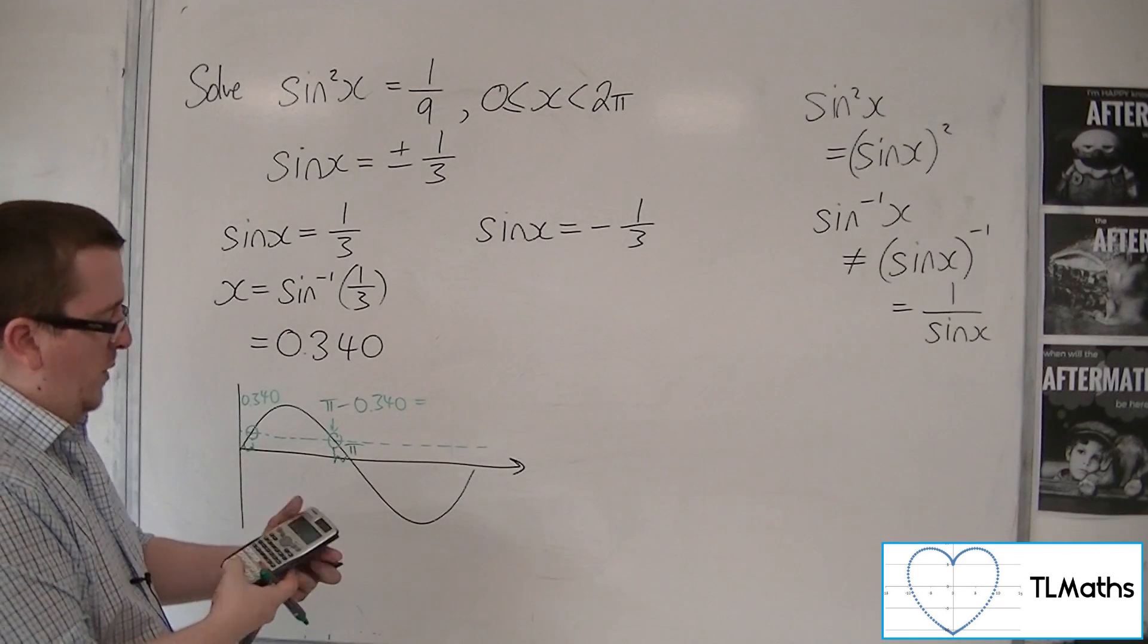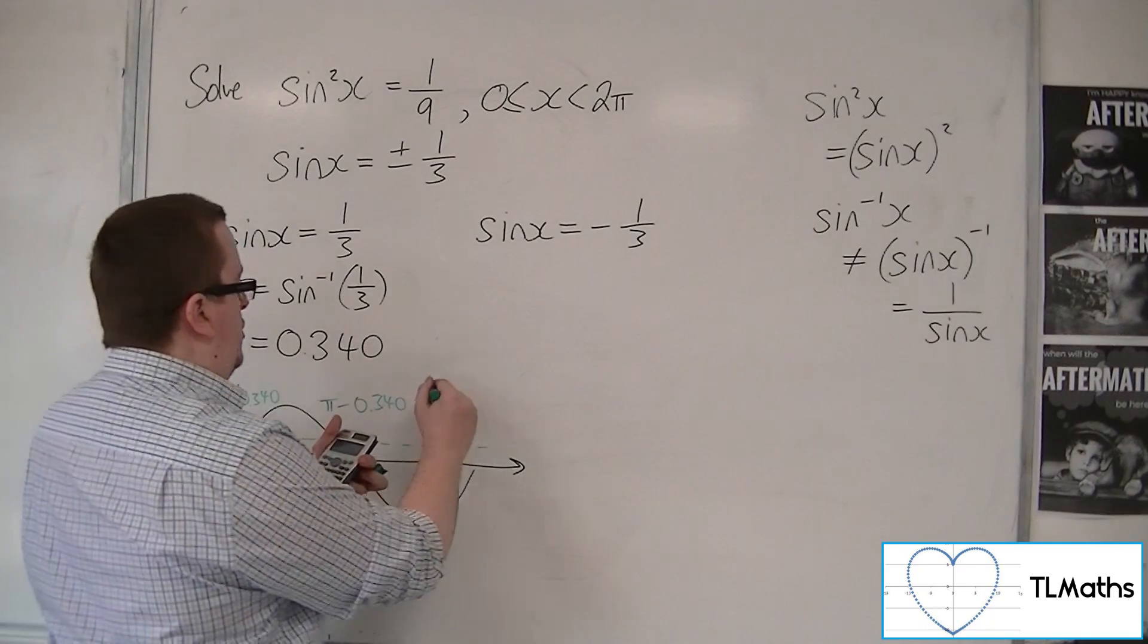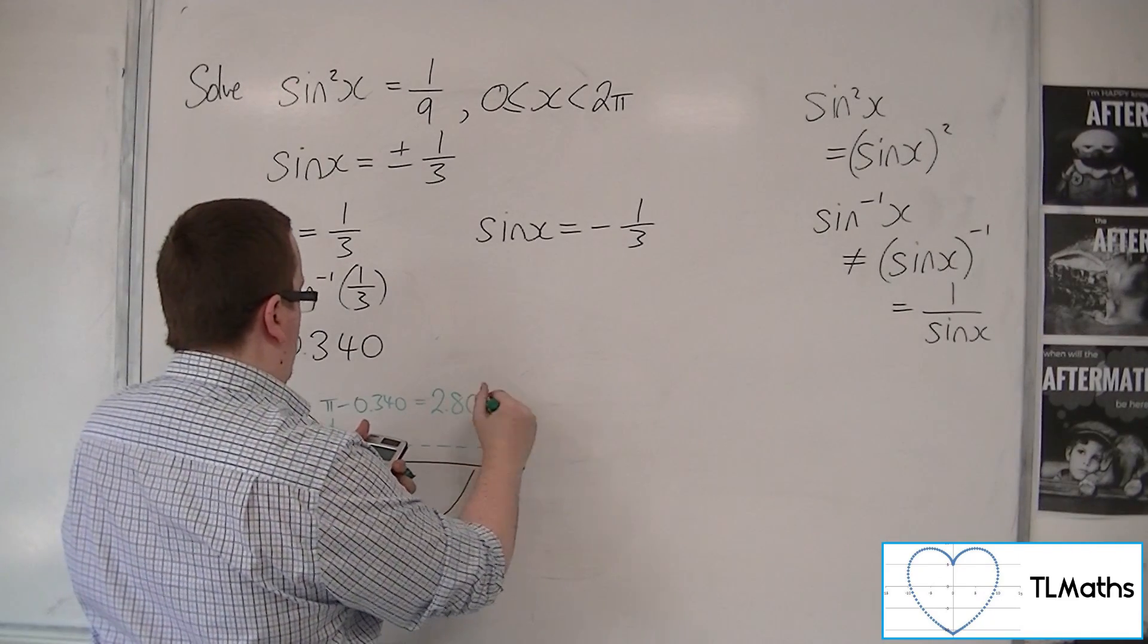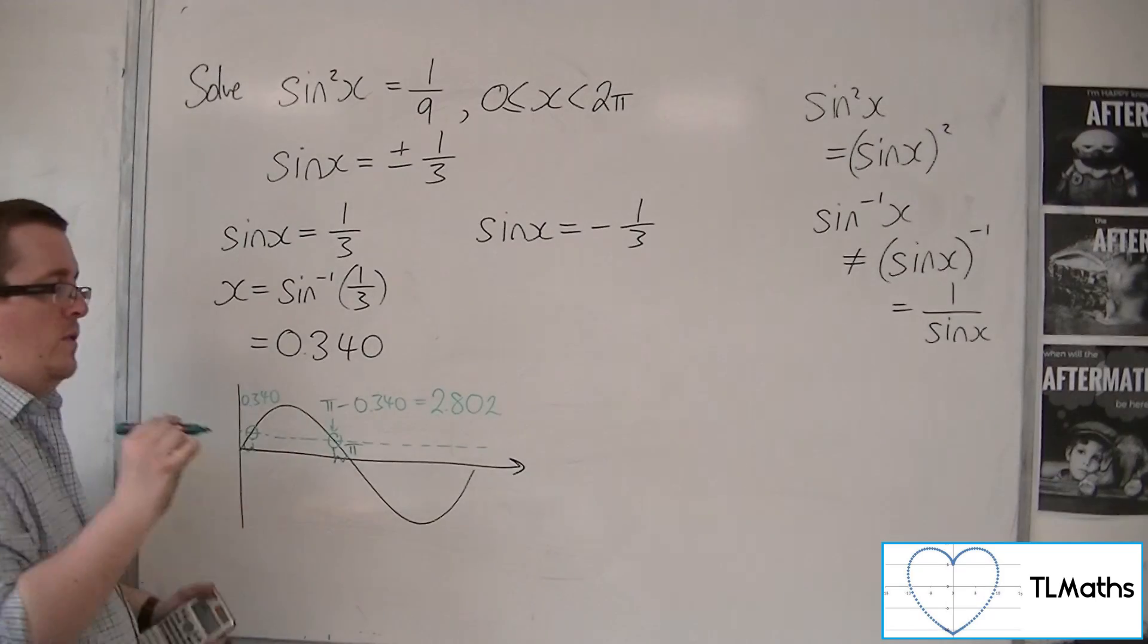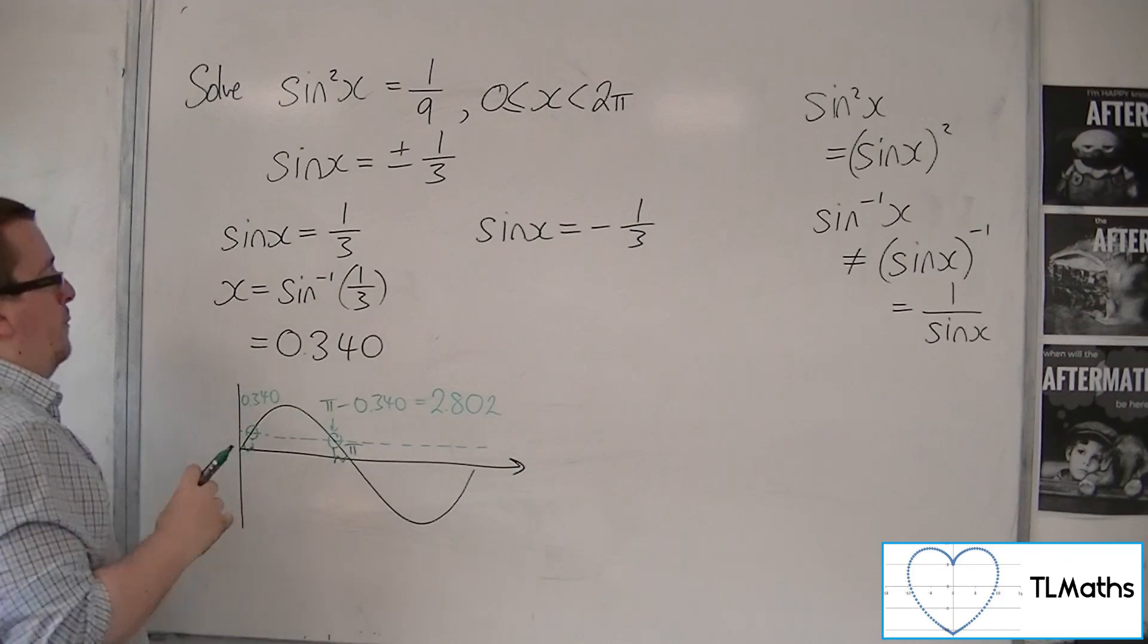So π take away the answer key, keeping everything on my calculator, is 2.802 to three decimal places. So I now have two solutions from that one.